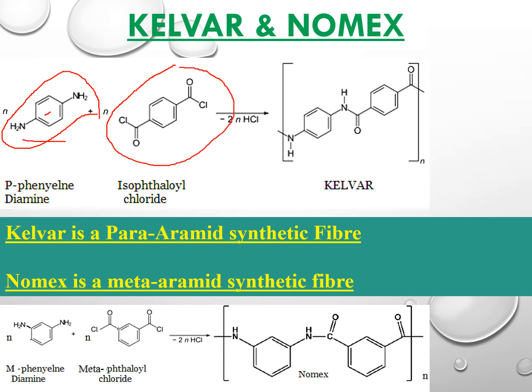When one monomer has two functional groups, it can interact with another monomer and they undergo condensation polymerization, losing a small molecule like HCl to form amide bonds — the C=O–NH bond is called an amide bond. The chain continues to form Kevlar, which is a para-aramid, because of the para functional groups.